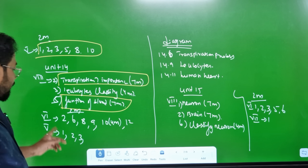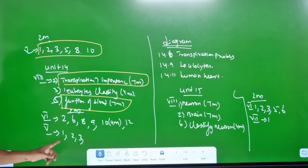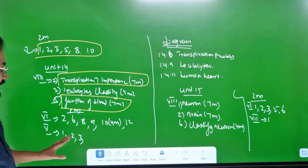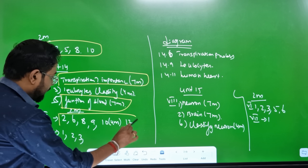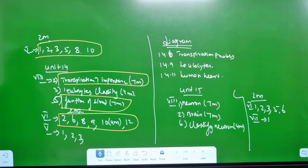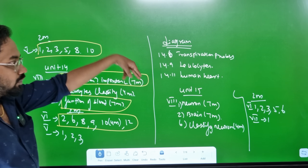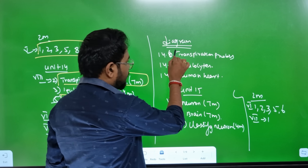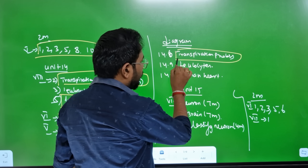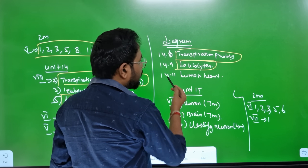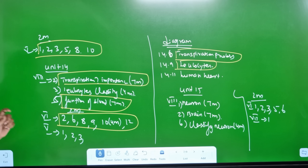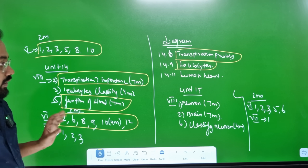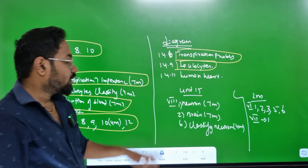Artery and veins. Roman number 5 is 1, 2, 3. So if Roman number 6 is 1, you can see 3 marks. Easy. Concussion. Heartbeat sound. Diagram. We can see the transpiration process, the leukocytes, the human heart. Unit 15.